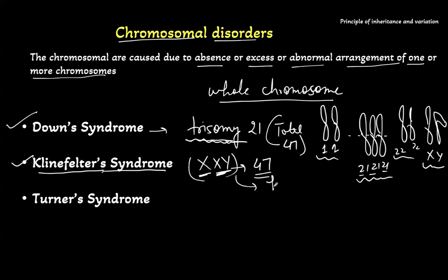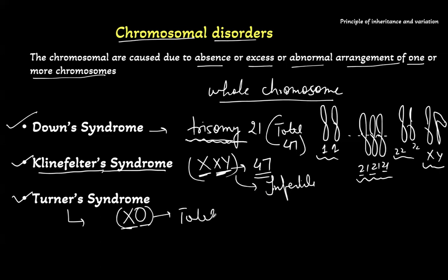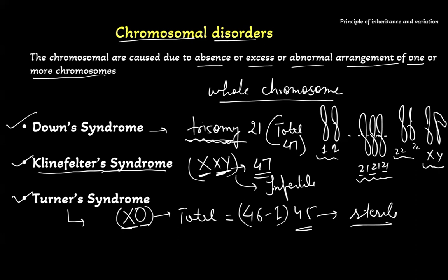Such people are infertile. Coming to Turner syndrome — in Turner syndrome, there is one chromosome missing, so we call it X0. A female having only one X chromosome, with the next X chromosome missing, will have 46 minus 1, so there will be only 45 chromosomes total. This female will also be sterile. Details about all these syndromes we will see in the actual class.